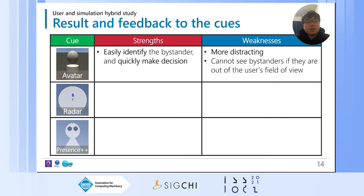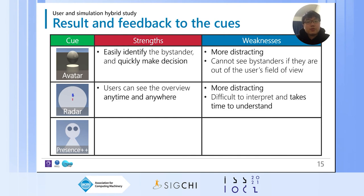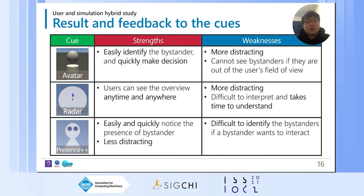The Presence++ could preserve immersion better than other cues, and user interviews provided even more insight into participants' experiences. Participants found the AvatarView disruptive and were uncomfortable with not knowing what was happening behind them. People liked the radar widget, but it took time to understand since users needed to remap the information to the physical world situation. It was also viewed as disruptive with lots of bystanders or highly interactive VR content. When participants used the Presence++ widget, they felt they easily and quickly noticed the cue anytime and anywhere, with less disruption. However, it was difficult to identify when bystanders wanted to interact, since the amount of information was not enough for identification.